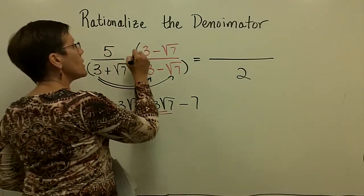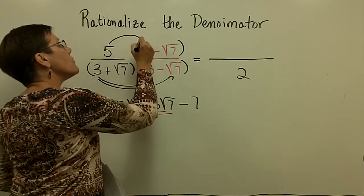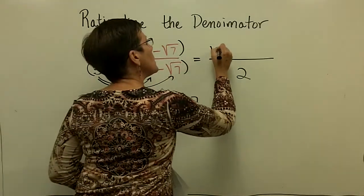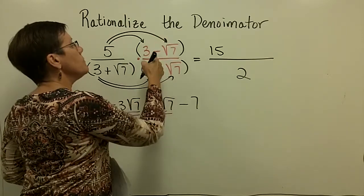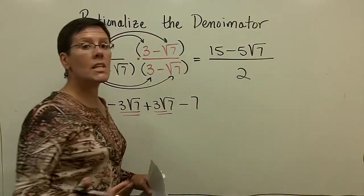Upstairs, I have to take this monomial and multiply it times this binomial, so I have to distribute it. So 5 times 3 is 15, and 5 times the square root of 7, with this minus sign here, is minus 5 times the square root of 7. And I'm all done.